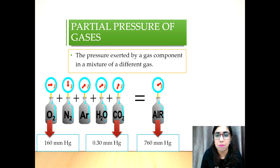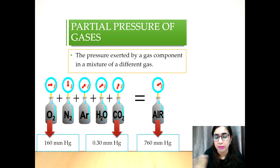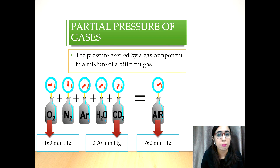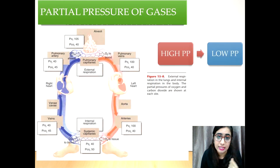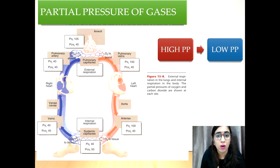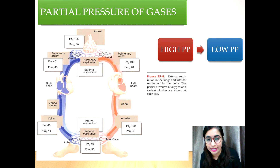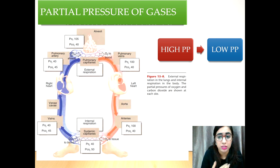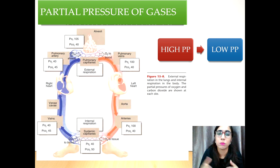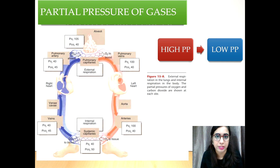The concept of partial pressure is important in predicting the direction of gas diffusion. A gas diffuses from high partial pressure to low partial pressure — this is called the partial pressure gradient. When I mention partial pressure gradient, it means the gases move from high partial pressure to low partial pressure of that particular gas.